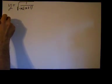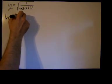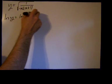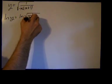The first step is to take the logarithm, natural log of both sides. So we have the natural log of y equals the natural log of the square root of 1 over x times x plus 1.